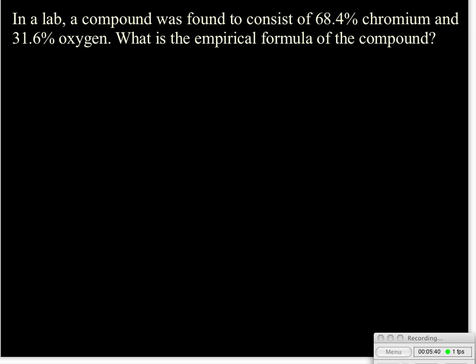So we'll go back to that first question and apply our steps here. Our first step was percent to grams. We've got 68.4% chromium and 31.6% oxygen. We just convert those immediately to grams, because if we had 100 grams of this compound, that's how many grams we'd have. Our next step is to convert to moles. To do that, we need to use the atomic masses from the periodic table.